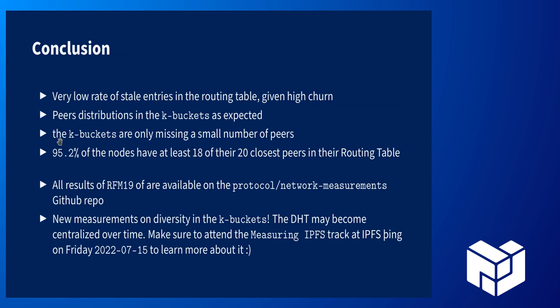What we can tell from this study is that the DHT is very healthy — maybe more than we could have expected. We see a very low rate of stale entries in the k-buckets, the peer distribution is as expected, only a few peers are missing from routing tables, and a very high rate of nodes knowing 18 out of their 20 closest peers.